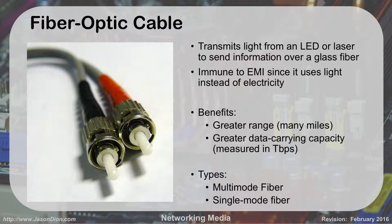The next topic is fiber optic cables — kind of the future. They're very fast and very good, but also very expensive. They work by transmitting light from an LED or laser to send information over a long glass fiber. Because they use light instead of electricity to transfer information, there is no EMI interference problem. The benefits include very long distances — up to many miles — and greater data-carrying capacity, up into terabytes per second. There are two types: multimode and single mode.